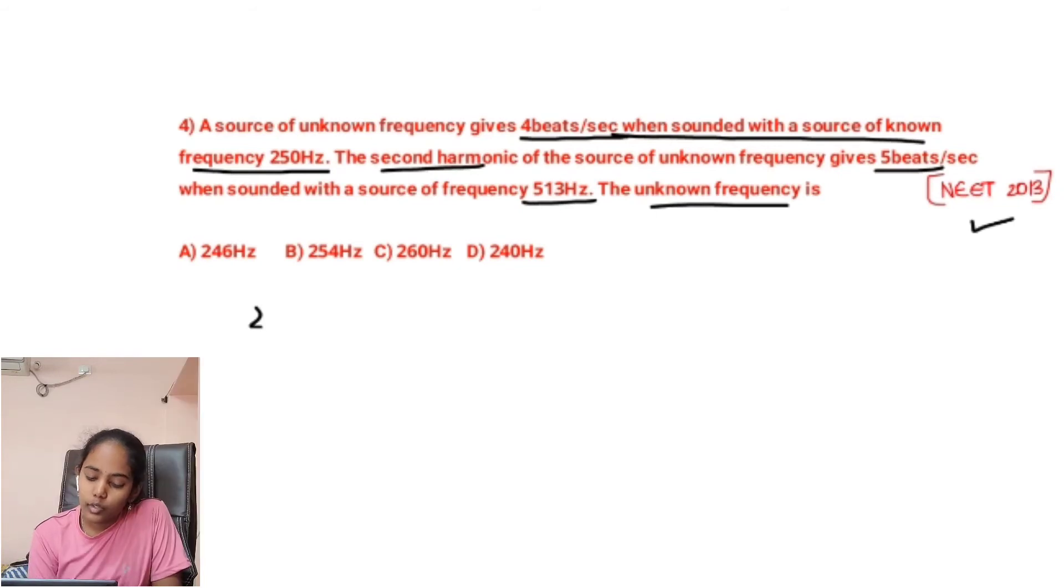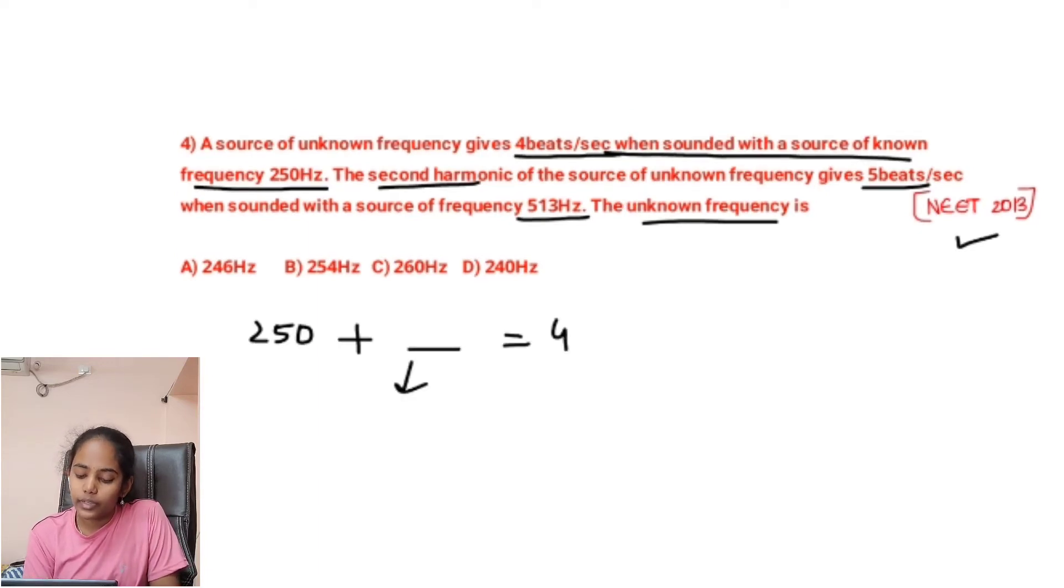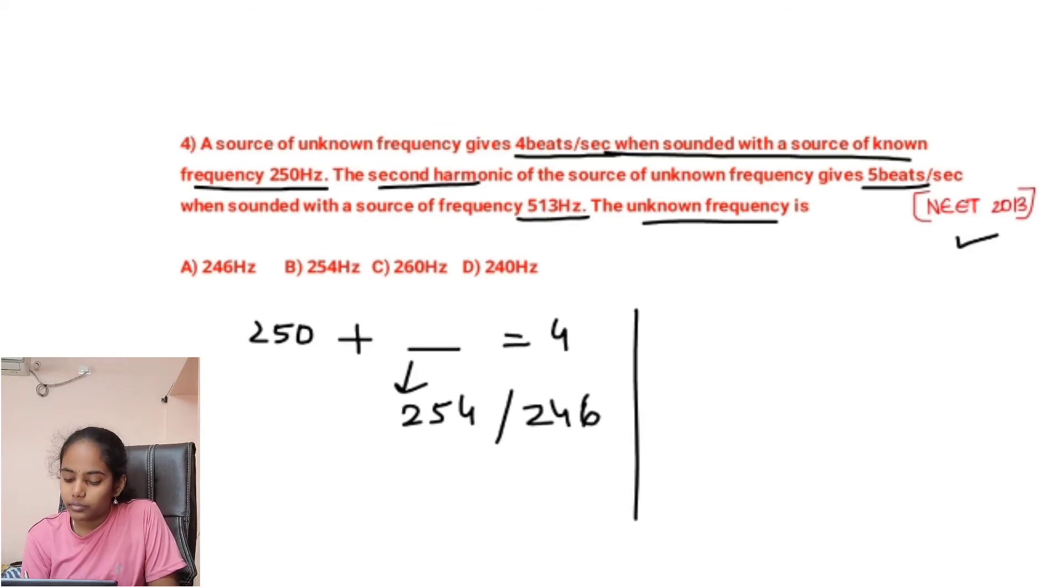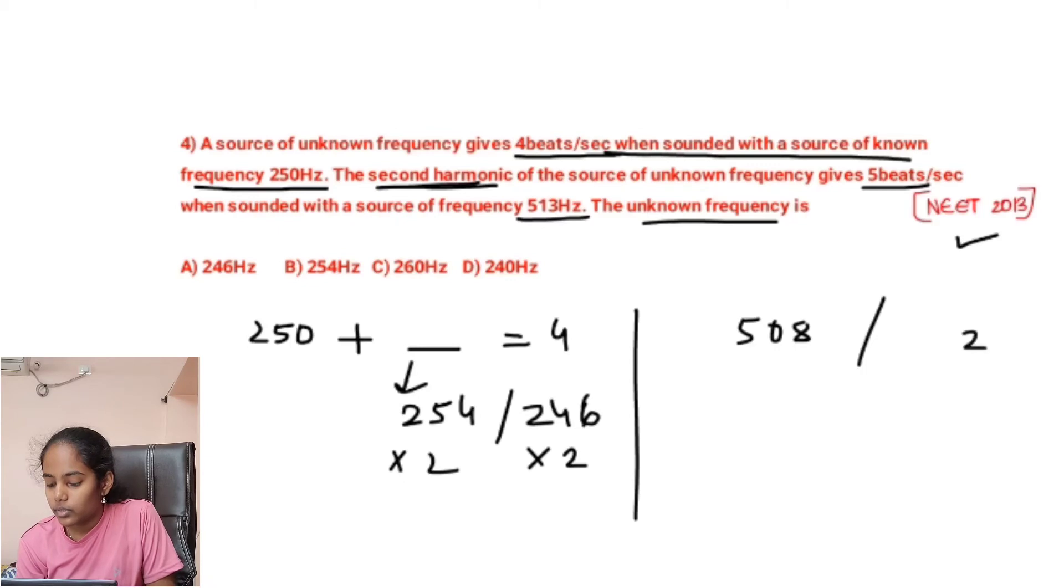So how to solve this? 250 with some unknown frequency produces 4 beats per second. So this may be 250 plus 4, that is 254, or it may be 250 minus 4, that is 246. Now we are seeing the second harmonic. Second harmonic means we have to multiply with 2. So 254 into 2 becomes 508, and 246 into 2 becomes 492.